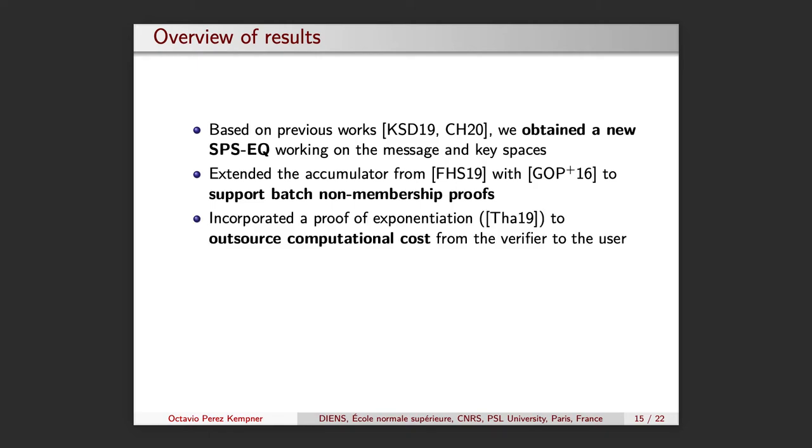Another improvement was the addition of a proof of exponentiation to outsource computational costs from the verifier to the user. This can be useful in some scenarios. It can be seen as an optional functionality and it basically allows the user to pre-compute some of the exponentiations that a verifier would normally have to do in order to verify a witness. For this to work, the user is required to provide a proof of correctness for those exponentiations. As one would expect, checking the correctness of the proof of exponentiation is cheaper than doing the exponentiation from scratch.